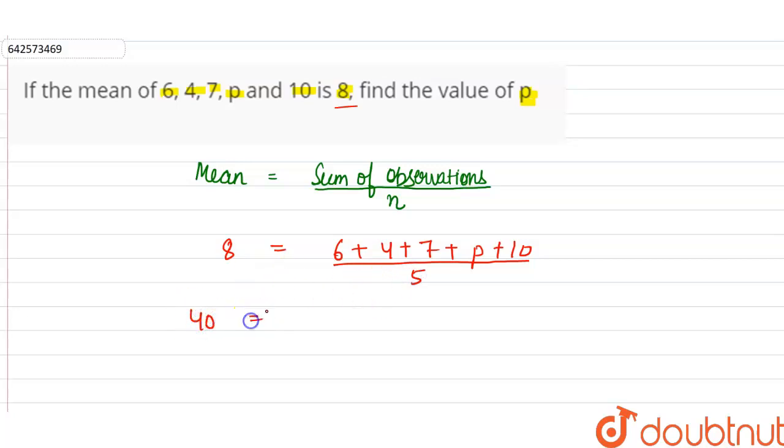6 plus 4 is 10, 10 plus 10 is 20, 20 plus 7 is 27, so 27 plus p. So we can say p will be equal to 40 minus 27, so 40 minus 27 is 13. So we can say the value of p is 13.